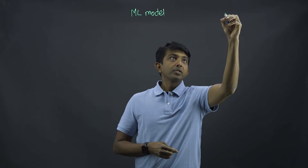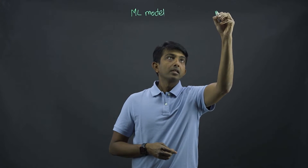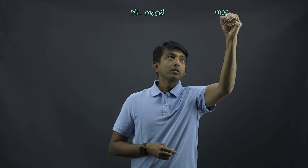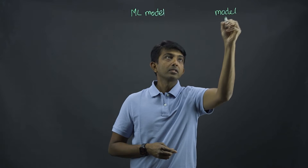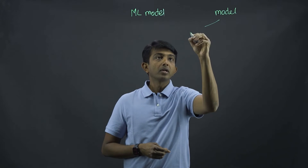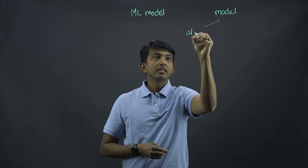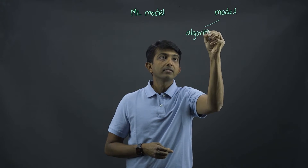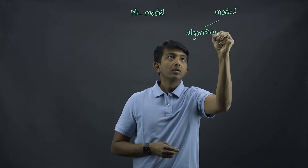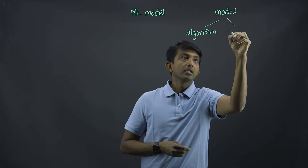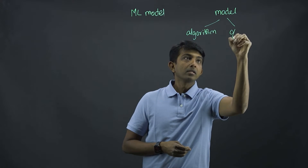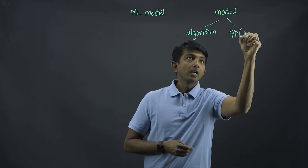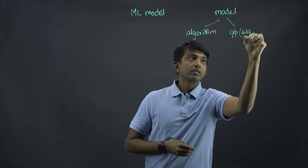In the context of machine learning, a model could mean two things: one, it's the algorithm itself, or it could mean the output of the algorithm.